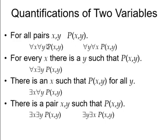For all x, there is y such that P of x,y. For all x, there exists y. This is a quantification form for nested quantifiers.